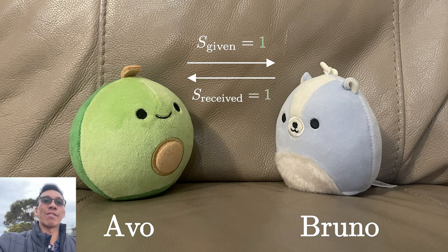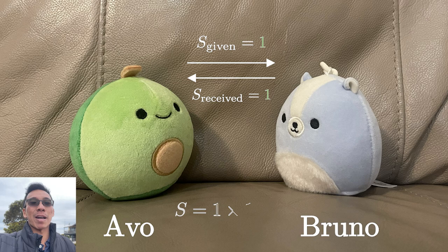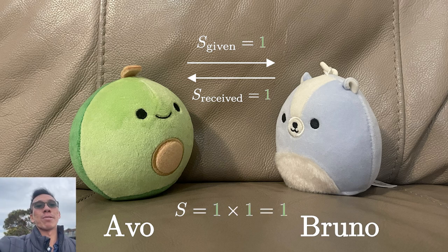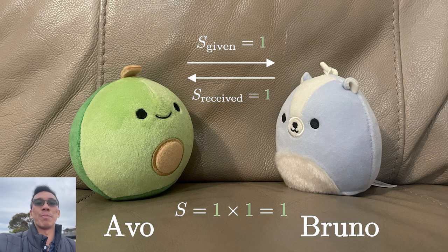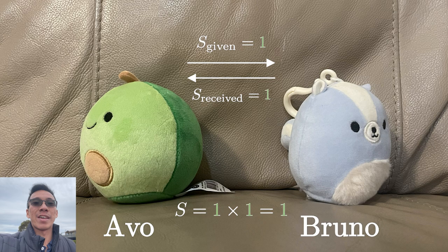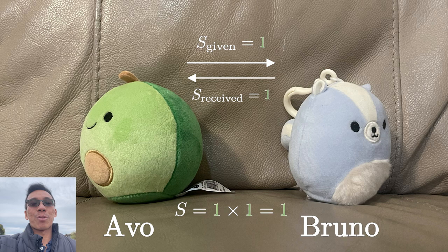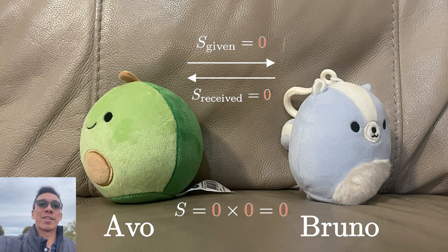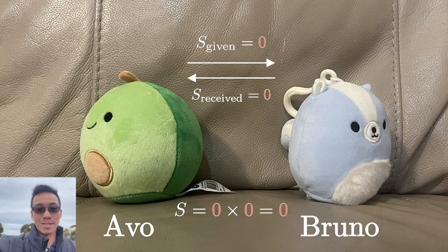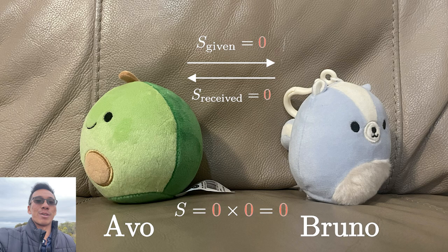The total mutual space for vulnerability is given by taking the product of these two ones. The product is 1. Avo feels that there is mutual space for vulnerability with Bruno. However, if Avo and Bruno had a fight then they stopped talking to each other, Avo cannot give Bruno that space for vulnerability. Likewise, Avo feels that Bruno will not give Avo that space for vulnerability. Therefore both terms will equal 0. There is no mutual space for vulnerability between Avo and Bruno.